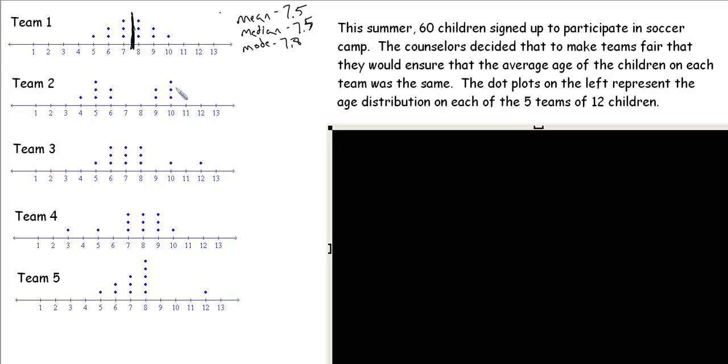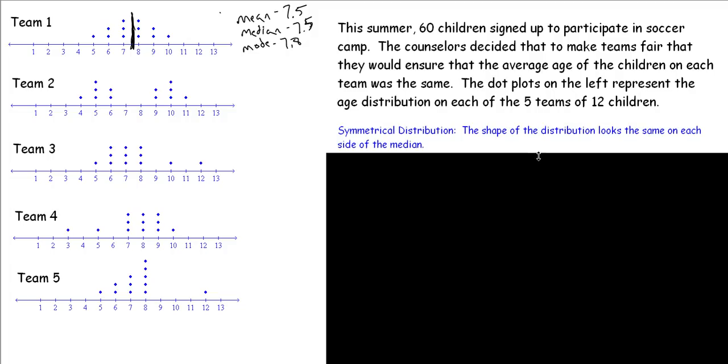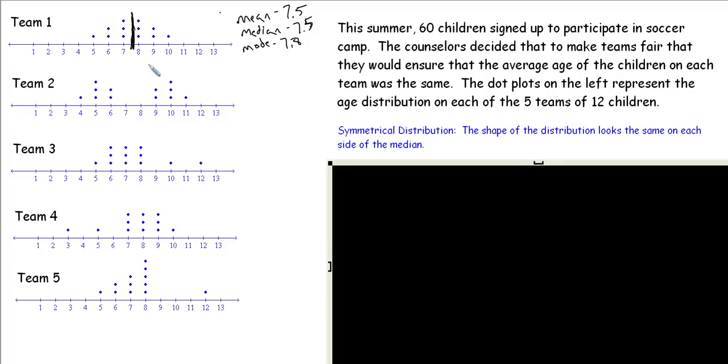Taking a look at this data, this is what you call a symmetrical distribution. A symmetrical distribution simply means that the shape of the distribution is the same on each side of the median. It's like a mirror image of one another, and therefore this would be a symmetrical distribution.